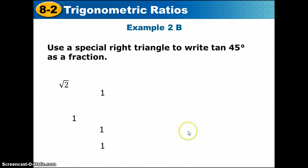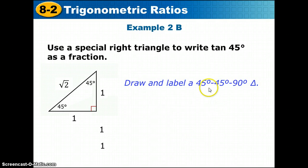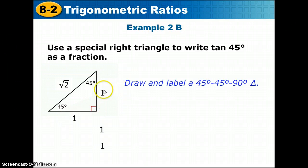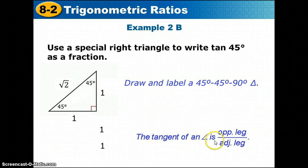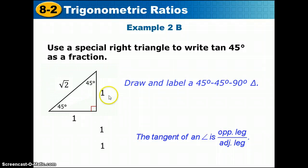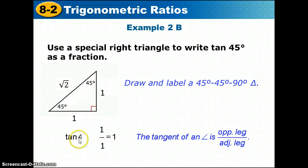For Example 2B, we use a 45-45-90 triangle. In this triangle, both legs are congruent — call them 1 — and the hypotenuse is √2. The tangent of an angle is opposite over adjacent. For either 45-degree angle, opposite and adjacent are both 1, so tangent of 45° = 1/1 = 1.